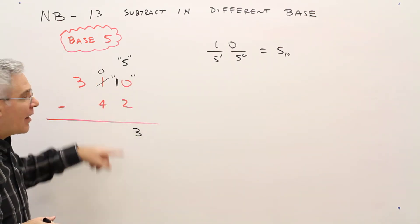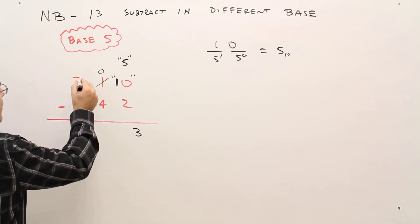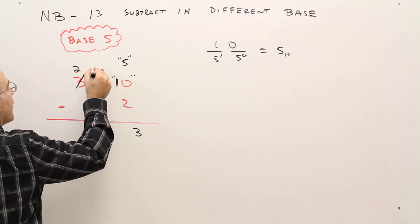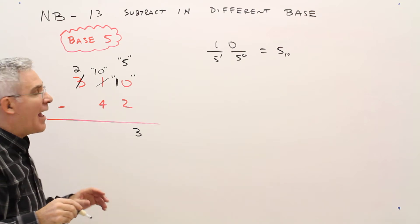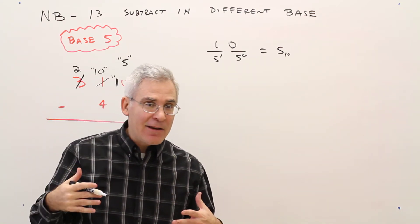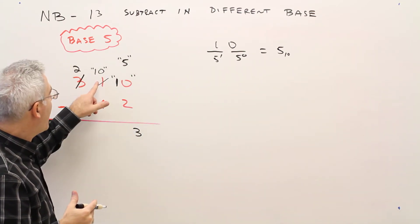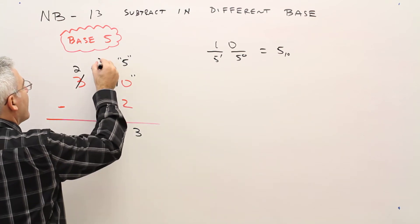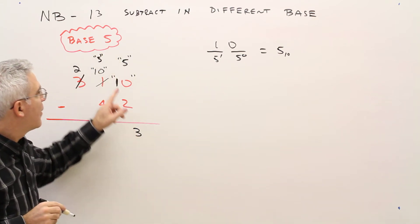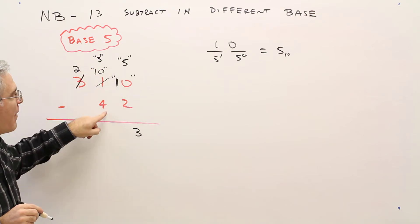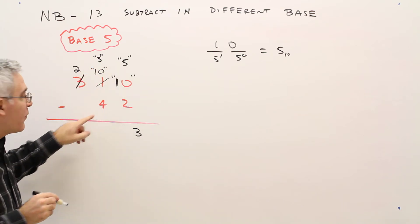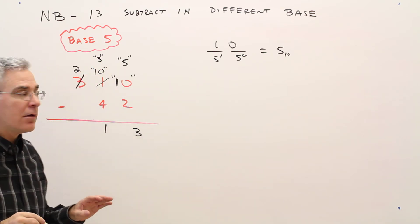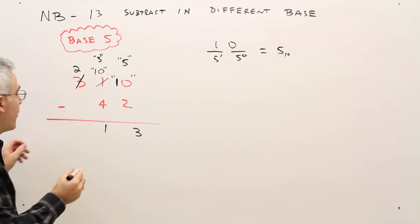Over here, again, I've got a borrow. So I'm going to cross this out, put this here, put that there. Again, that's not a 10. That's a 1-0 in base 5. And that's equivalent to a 5. So 5 minus 4 is 1. And then this 2 minus 0 is just 2. I'm done.